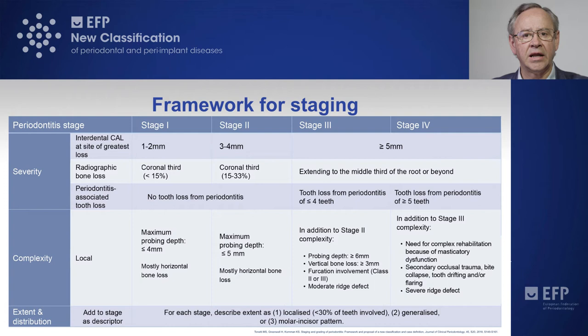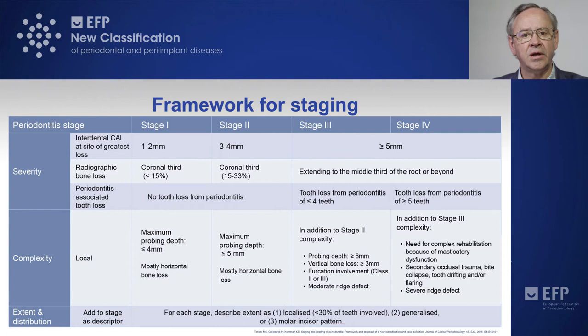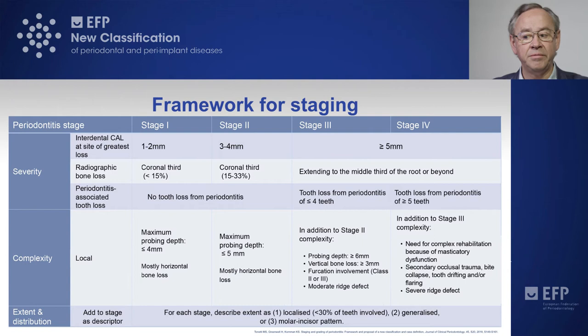In stage two, clinical attachment loss is between three and four millimeters, bone loss extends up to a third of the root, and similarly to stage one, the patient has not lost teeth due to periodontitis. Maximum probing depth is up to five millimeters, and most detectable bone loss is of a horizontal pattern.